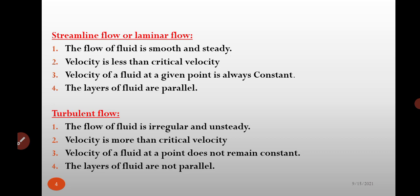Velocity of fluid at given point is always constant. The layers of fluid are parallel. In turbulent flow, the flow of fluid is irregular and unsteady. Velocity is more than critical velocity. Velocity of a fluid at a point does not remain constant. The layers of a fluid are not parallel.